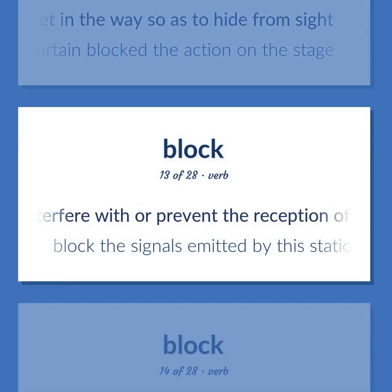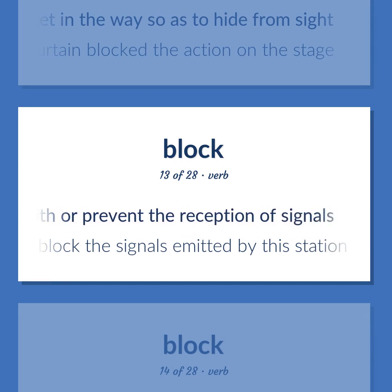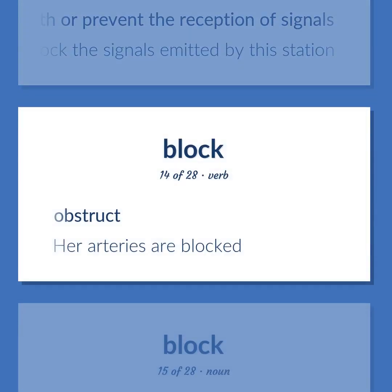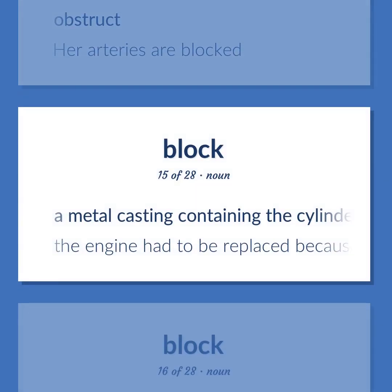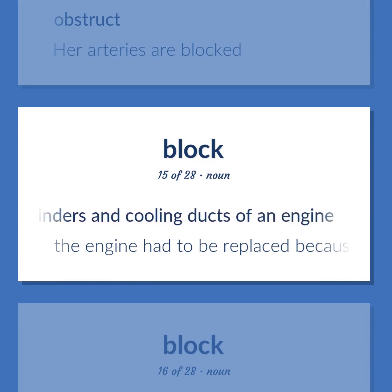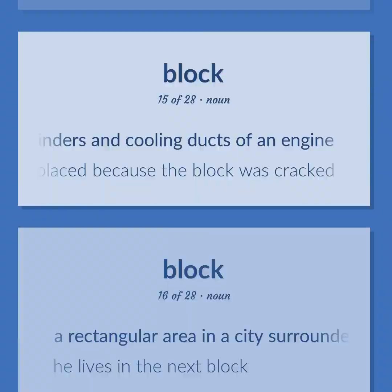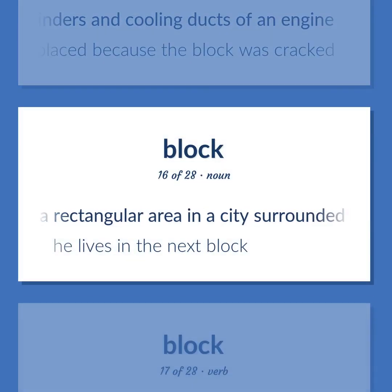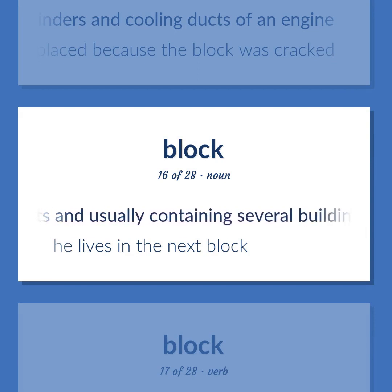Interfere with or prevent the reception of signals. Block the signals emitted by this station. Obstruct. Her arteries are blocked. A metal casting containing the cylinders and cooling ducts of an engine. The engine had to be replaced because the block was cracked. A rectangular area in a city surrounded by streets and usually containing several buildings. He lives in the next block.